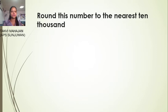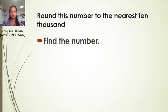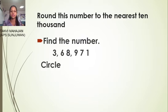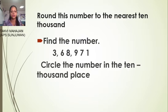So, rounding this number to the nearest ten thousand. Find the number — our first step is to find the number. The number is 368,971. We have to round this number to the nearest ten thousand. Circle the number in the ten thousands place.